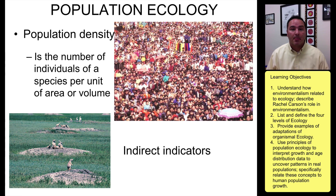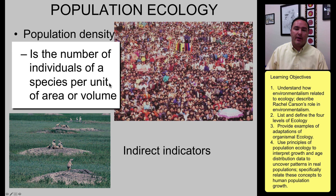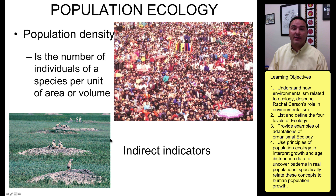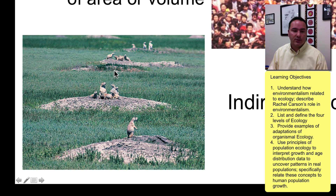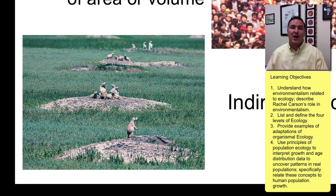Now we're going to look at population ecology. One of the things ecologists look at is population density — basically, how many individuals of the same species are living in a certain area at the same time, the species per unit of area or volume. One way to do this would be to count every individual, like a census. But organisms won't stand in line or fill out a form, so we often use indirect indicators of population size. For example, to estimate prairie dogs in a certain area, you could calculate the average number of prairie dogs per hole, count the holes, and extrapolate out to the entire area.